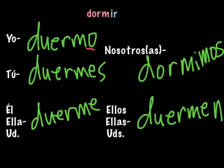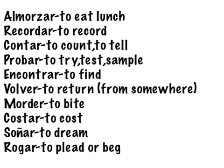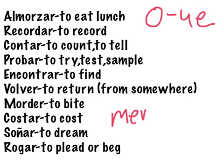So it changes normally: O, ES, E, AMOS, EN, and then it only stem-changes in the four forms — never in the nosotros. Here's a list of typical O to UE stem-changing verbs. It's very important that you memorize these verbs. There's no rhyme or reason as to why certain verbs are stem-changing — it's just a matter of memorizing. But once you memorize them, it's easy because they all conjugate the same way.